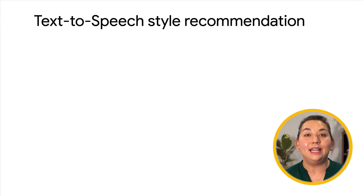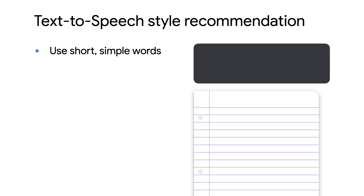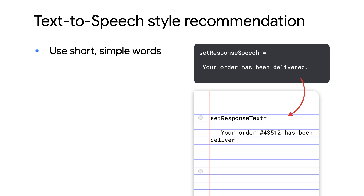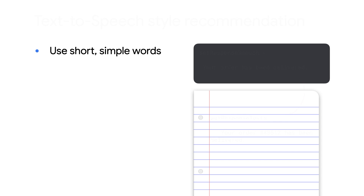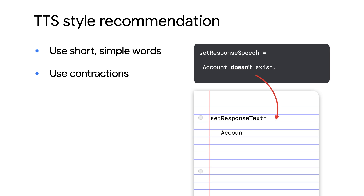Going back to the text-to-speech feature, we have some style recommendations. The first is using simple and plain language because it has the broadest appeal, making it accessible to people of all backgrounds. For example, a speech string might say 'your order has been delivered,' while the display text says 'your order 43512 has been delivered' — in situations where the order number isn't important, the speech phrase can omit it. Use contractions in your speech; words like 'cannot' and 'do not' can sound punishing and harsh. For example, the speech might say 'account doesn't exist' while the text says 'account does not exist.'